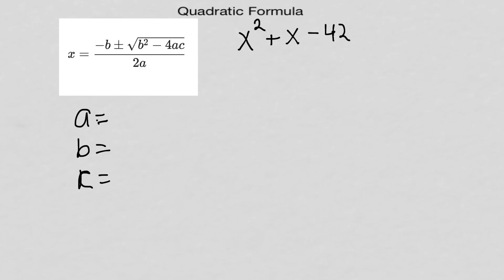For x squared plus x minus 42, a equals 1, b equals 1, c equals negative 42.